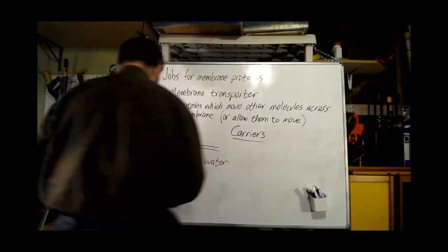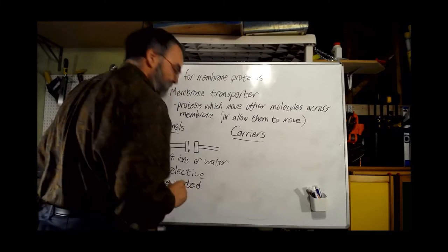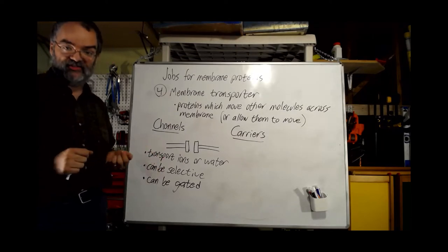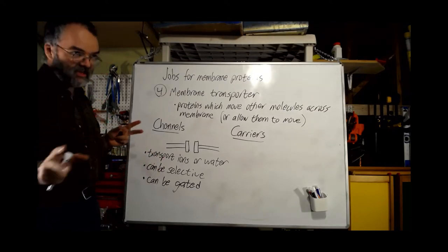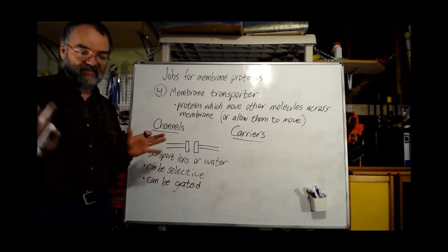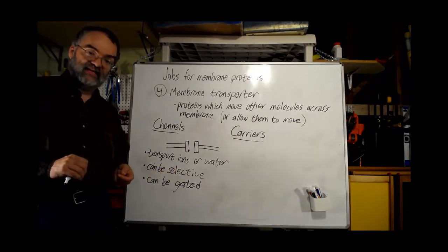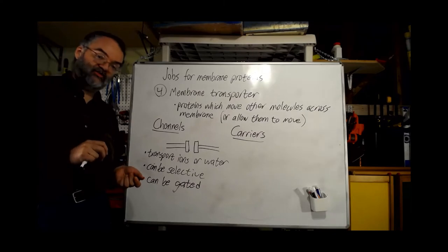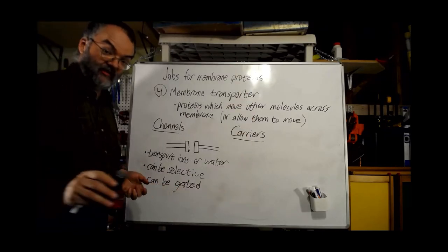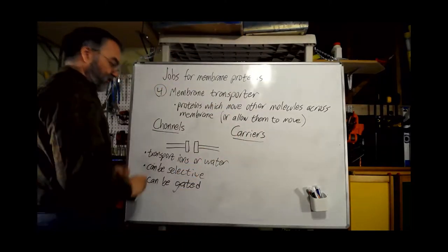Channels can also be gated, meaning they can be made to open or close under some circumstances. Not all channels are gated — some channels are simple and pretty much always just open, just a hole in the membrane that allows whatever they're selective for to pass through. There's also a subtlety where some channels only easily allow movement in one direction — called rectifier channels — but we're not going to get into those right now. So in your notes, leave space for carriers, because we're going to come back to that.